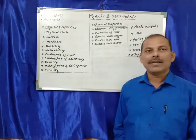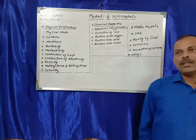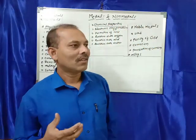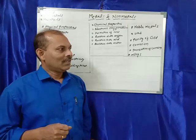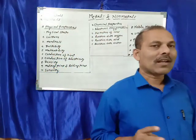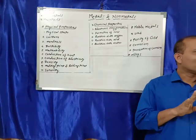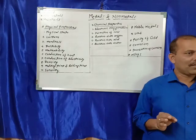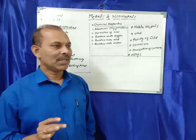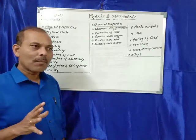So let us study about metals and non-metals. Objects or materials in the world are made up of elements, compounds, or different types of mixtures. The elements we studied earlier — scientists classify these elements generally into three groups: that is metals, non-metals, and metalloids.